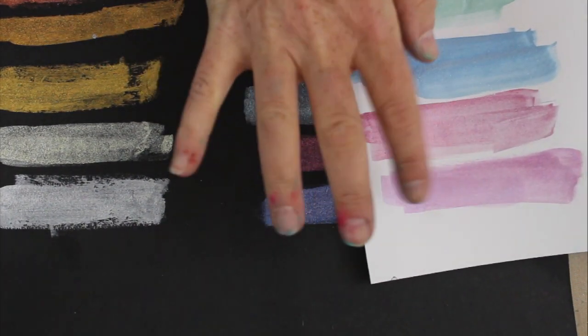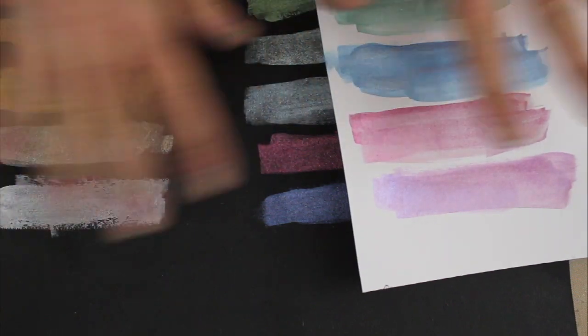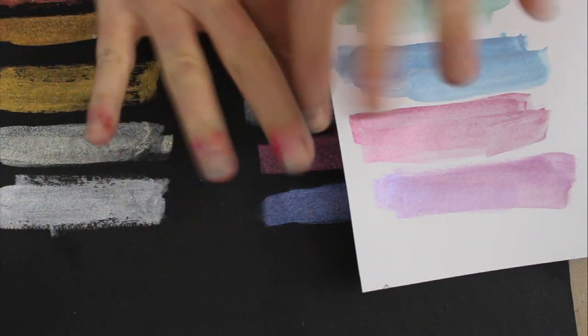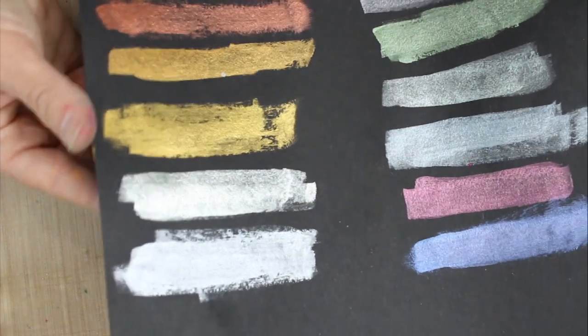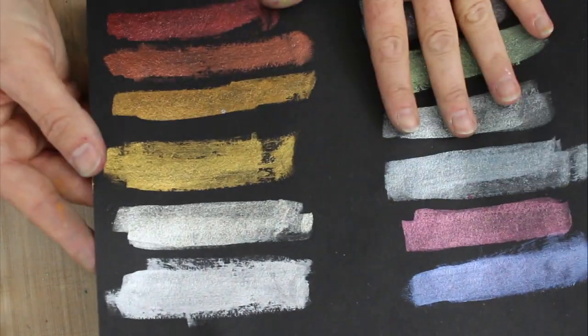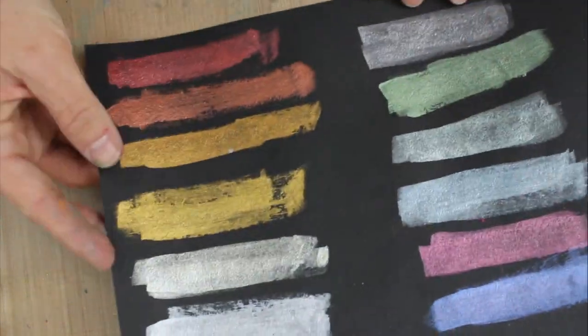This is what they call an interference color by the way. Pardon my manicure, I'm a painter and I have painted hands today. This is amazing and this is not even good cardstock, this is more like construction paper black, and yet you still get these incredible sparkly effects.